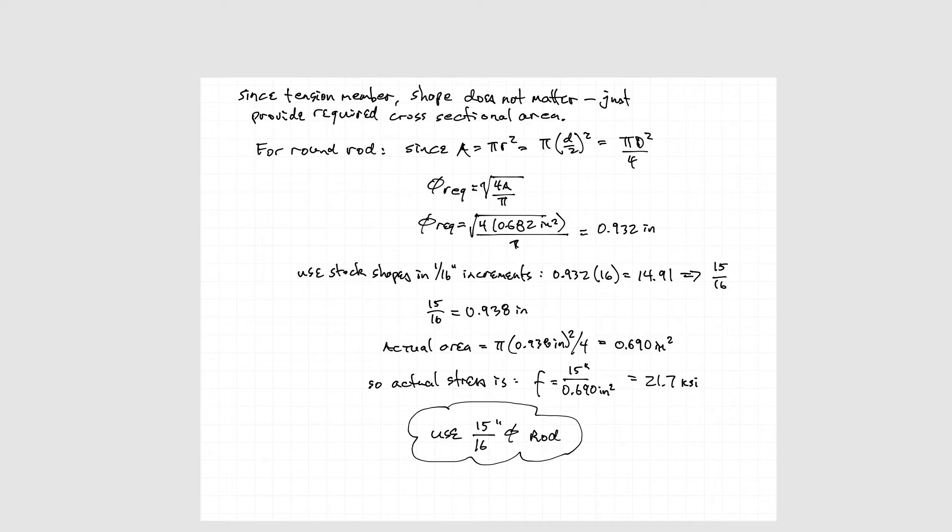Our actual stress will be lower. The actual cross-sectional area comes out to 0.69 square inches. Divide 15 kips by 0.69 square inches, we get 21.7 ksi for a 15/16ths inch diameter rod.